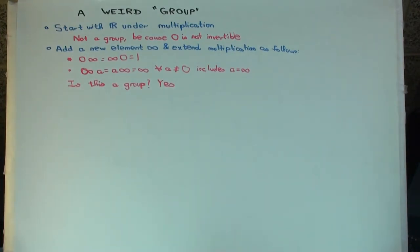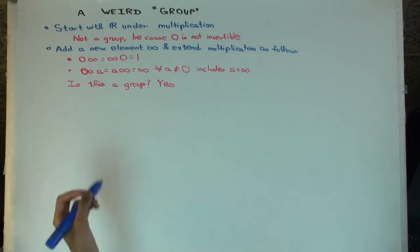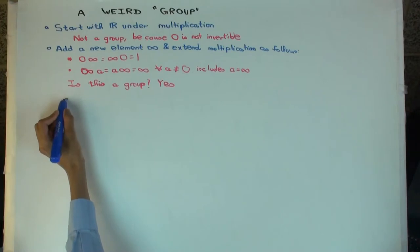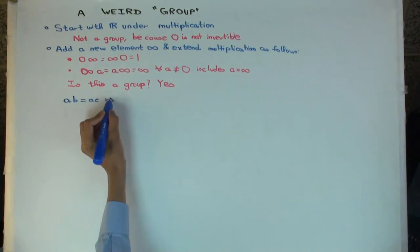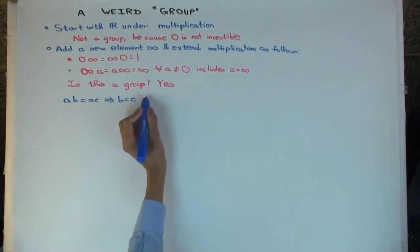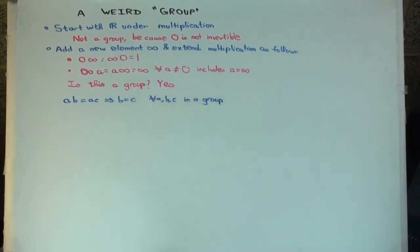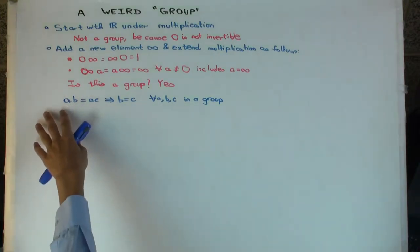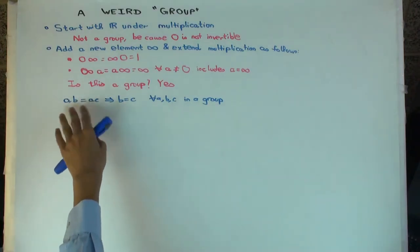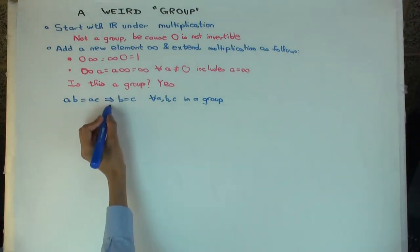Now let's try to understand the behavior of this group and why I said it's a weird group. In any group you have a property called cancellation: if ab = ac, then b = c. The proof: multiply both sides on the left by a-inverse, use associativity, cancel a-inverse·a to get the identity on both sides, and you get b = c.